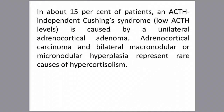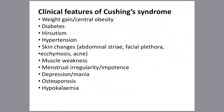Clinical features of Cushing's syndrome include weight gain — usually central, described as a 'lemon on matchsticks' appearance with a large abdomen and thin limbs.